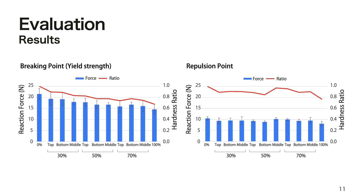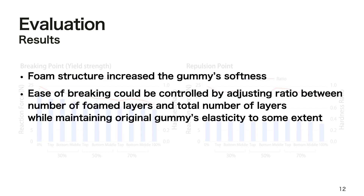The repulsion point for the gummy under almost all conditions differed by less than 1N from that of the gummy without foam. We concluded that the foam structure increased the gummy's softness, and that the ease of breaking could be controlled by adjusting the ratio between the number of foam layers and the total number of layers, while maintaining the original gummy's elasticity to some extent.